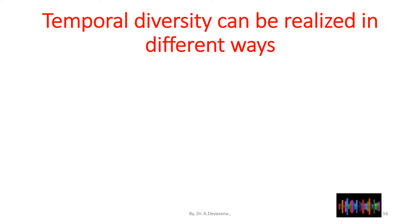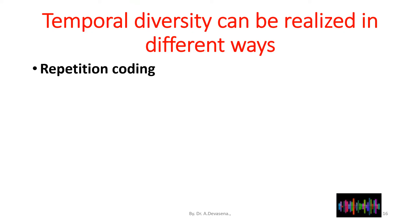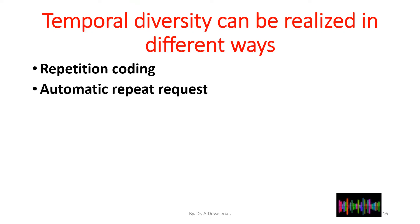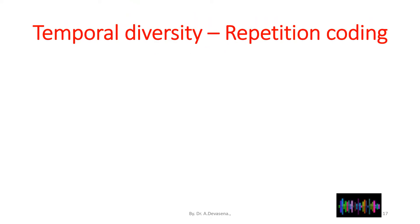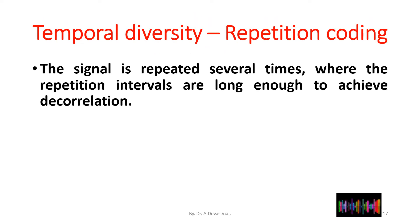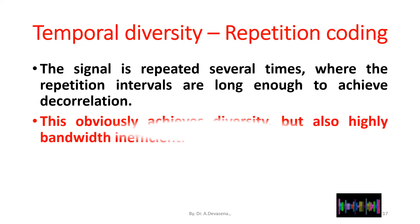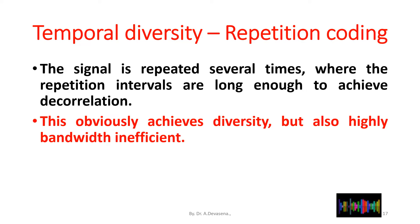Temporal diversity can be realized in different ways: first is repetition coding, second is automatic repeat request, and the third is a combination of interleaving and coding. In repetition coding, the signal is repeated several times where the repetition intervals are long enough to achieve decorrelation. This achieves diversity but is highly bandwidth inefficient.